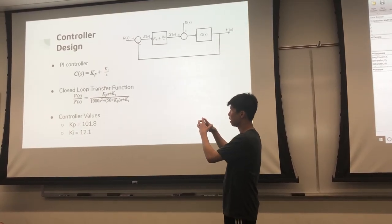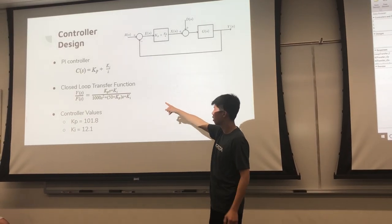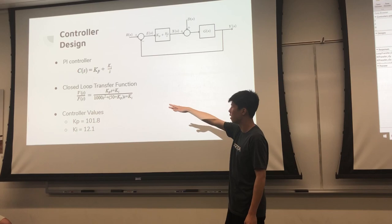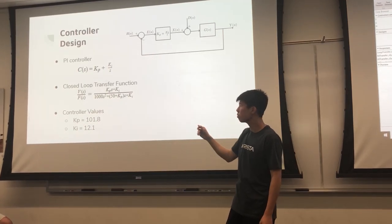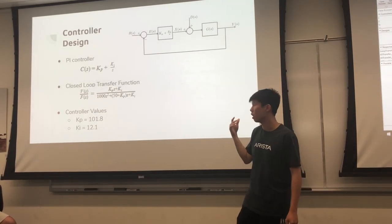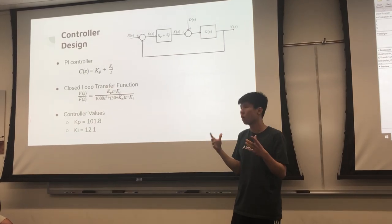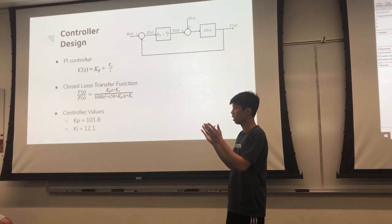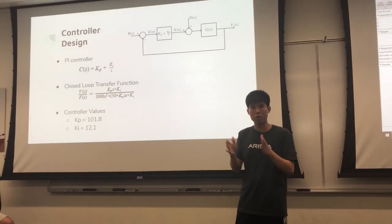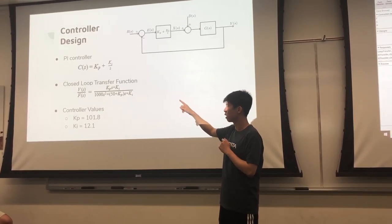By multiplying the two together, we get an equation with kp plus ki on top and that denominator at the bottom. With this equation for the closed-loop transfer function, we can put it in standard form. By putting it in standard form, we can apply our design specifications from the previous slide and use that to calculate the values for kp and ki.